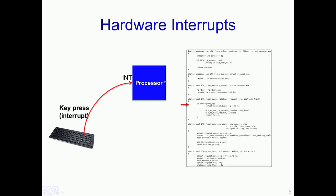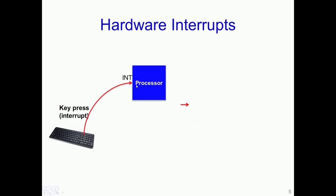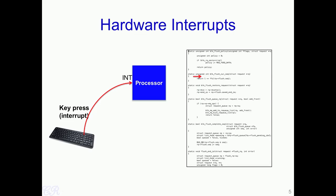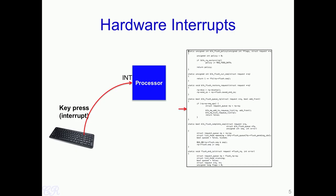Let us see how this interrupt takes place and what happens in the processor. The processor typically would be executing a program and executing some instructions. When a key is pressed, an interrupt is generated to the processor, resulting in a switch to what is known as the interrupt handler routine. Since it is the keyboard which caused the interrupt, the keyboard interrupt handler routine would be invoked. The processor executes this keyboard handler routine until an IRET instruction is obtained, at which point the context is switched back to the program which was originally being run. In this way, interrupts could occur any time during the program's execution, resulting in a new context being executed, after which the processor goes back to the original context.